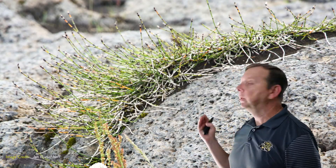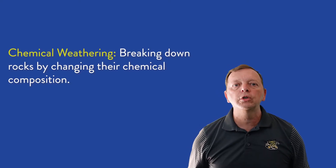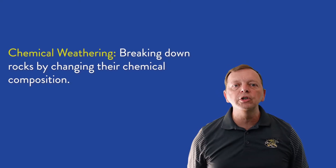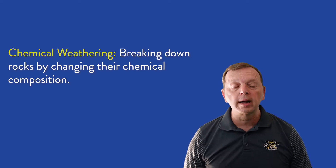Vegetation could also play a part. Plants will often grow into the cracks of a rock, and as their roots force their way into the crack, it'll start to pry the crack even wider. These are all forms of physical weathering. While physical weathering is essentially taking a crowbar to break rocks apart, chemical weathering breaks down the rock by changing the actual chemical composition of the rock.